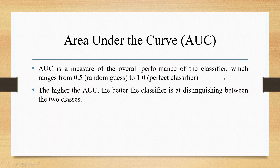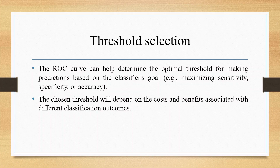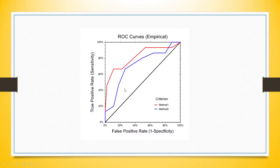Area under the curve is a measure of overall performance of the classifier, ranging from 0.5 to 1. The higher the AUC, the better the classifier at distinguishing between the two classes. The ROC curve can help determine the optimal threshold for making predictions — either to maximize sensitivity, specificity, or accuracy. The chosen threshold depends on the costs and benefits of different classification outcomes. You can see we have used two models — the blue one and the red one. The red model is better because it moves closer to the idealistic situation where the curve aligns with the y-axis and x-axis. If your curve moves nearer to it, the classification accuracy is good.